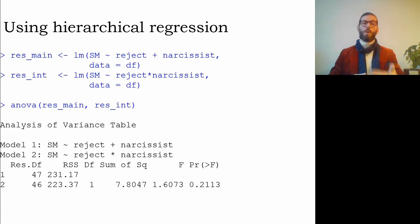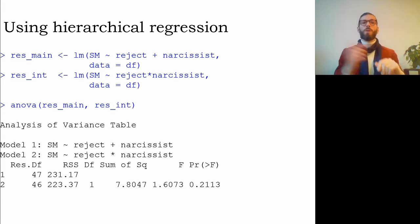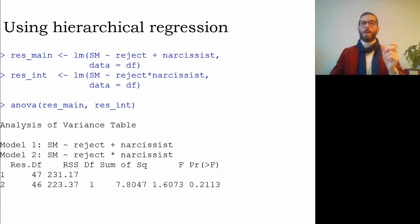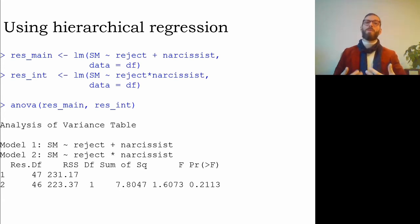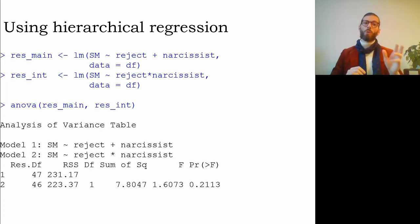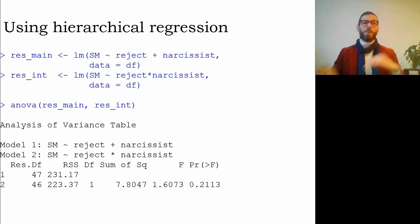To analyze this using hierarchical regression, I create an object resmain using the lm function, predicting SM from rejection plus narcissism using data DF. Then I create resint predicting SM from rejection multiplied by narcissism. In R, I conduct hierarchical regression by calling ANOVA comparing resmain with resint. These are nested models — I can go from the more complicated interaction model to the simpler main-effects model by constraining the interaction coefficient to zero.